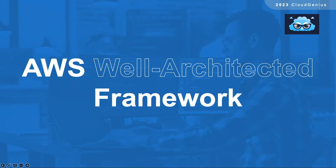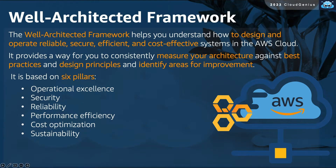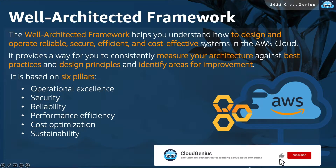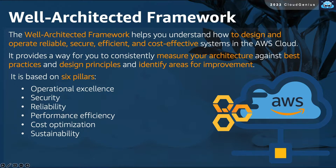The final topic in this section is the well-architected framework. After migrating the workload to AWS, we need to ask an important question: is this the best architecture for the application on AWS? Am I taking the full potential benefit and value of being in the cloud? The lift and shift strategy is the most commonly used strategy because it accelerates migration, but this simply means you are replicating an on-premises architecture to the cloud. This will not be the best form for that application on the cloud — it can be better.